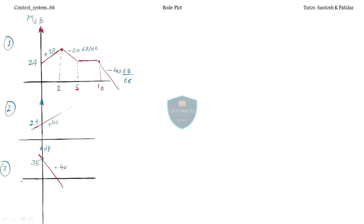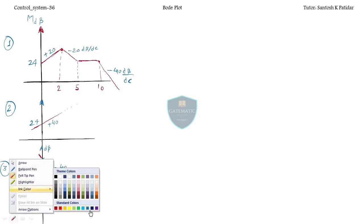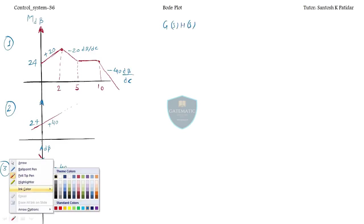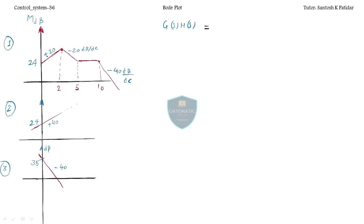Hi friends, welcome back. Let's start the session with these three questions. We have the plot given and we have to find out the transfer function. Let's start — let me change the pen color. So the point is how to proceed: we are going to find out the transfer function. Let's find the initial slope.